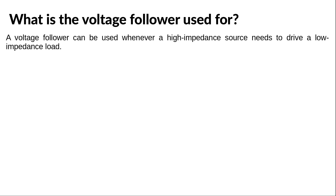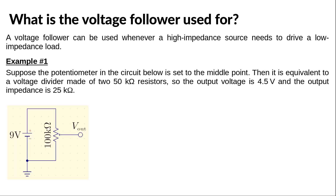Hi everyone and welcome to the third part on the operational amplifier. We are going to see some more circuits that involve op-amps, but before we proceed, let us go back to the voltage follower that we discussed in the first part. Remember, this circuit outputs a copy of the input, and although such a circuit might seem to be useless, it is actually very useful. The reason is that the circuit has a high input impedance and a low output impedance. This means that a voltage follower can be used whenever a high impedance source needs to drive a low impedance load. Let us explain this with two examples.